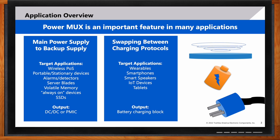The power muxing solution is also great for efficient charging — for example, wearable devices, smartphones, smart speakers, IoT devices, or automotive infotainments that may need to be charged while in use. The concept here is that we need to break up a power line before introducing a new line with new voltage with different power protocols.